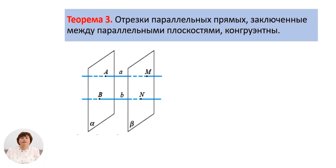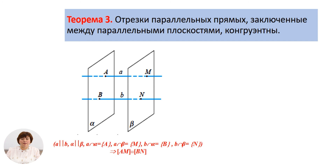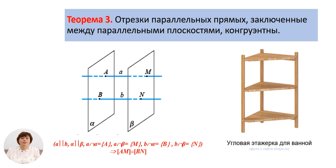Теорема 3: отрезки параллельных прямых, заключённые между параллельными плоскостями, конгруэнтны. Вы видите две параллельные плоскости α и β и соответственно отрезки AM и BN. По нашей теореме эти отрезки параллельны. В качестве иллюстрации – угловая этажерка для ванной, где плоскости полок параллельны между собой, а отрезки опор равны между собой.